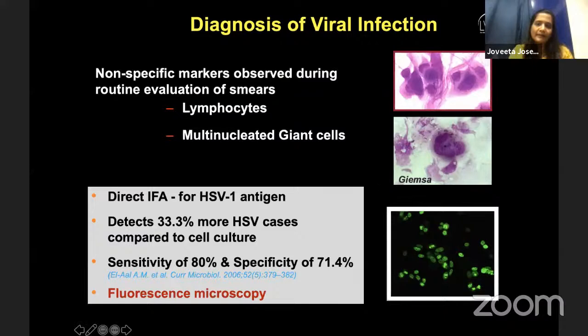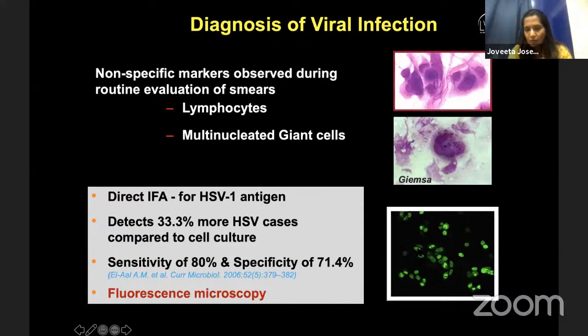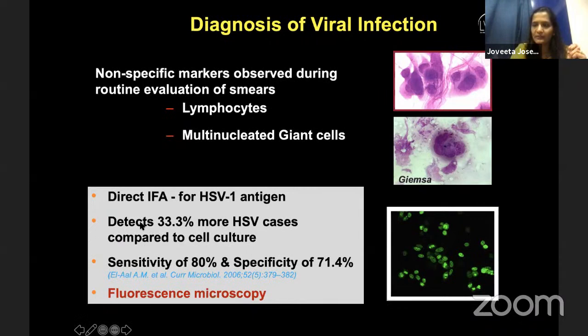Bacteria and fungi are relatively easier to diagnose on gram stain, but viral infection requires more expertise — by the presence of lymphocytes or multinucleated giant cells on Giemsa stain. Nowadays, immunofluorescence assay (IFA) for detection of HSV-1 antigen is more common, showing cells that fluoresce when they take in the virus. HSV-1 is the most common virus causing keratitis. Even in COVID, we have not seen prominent cases leading to keratitis — some reports of conjunctivitis but not keratitis. The disadvantage of IFA is that it requires a fluorescence microscope.